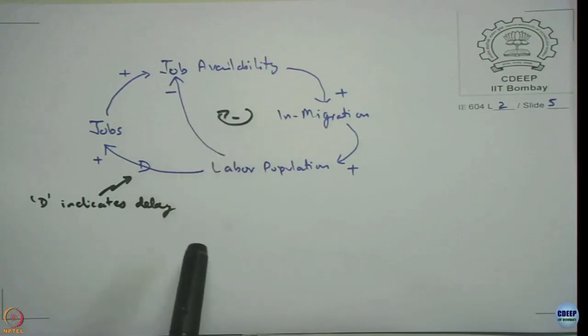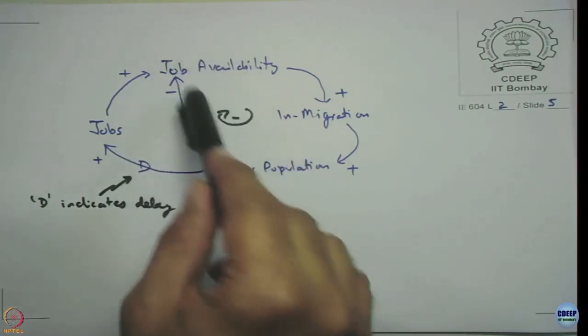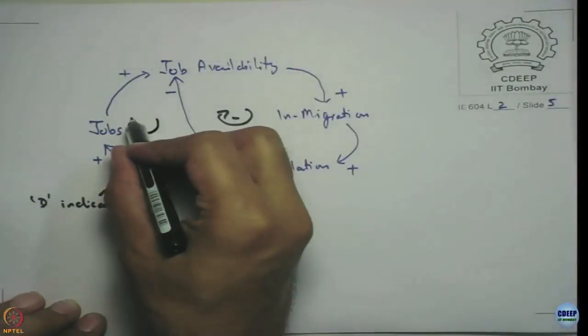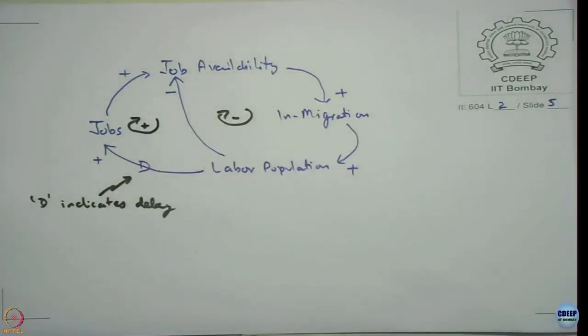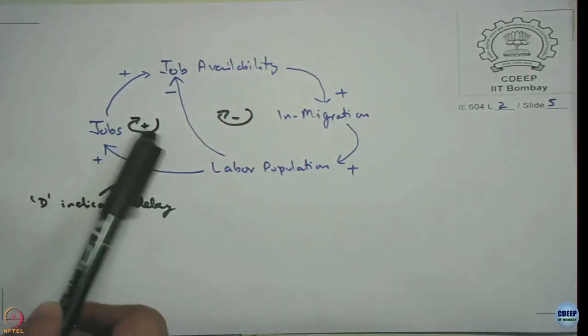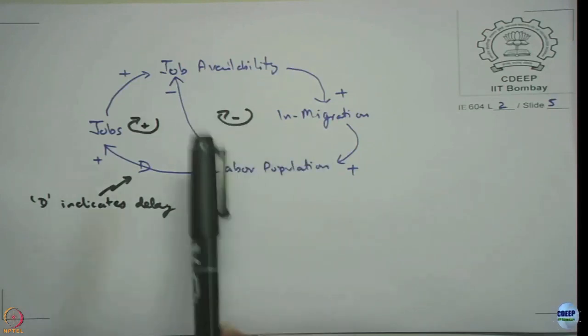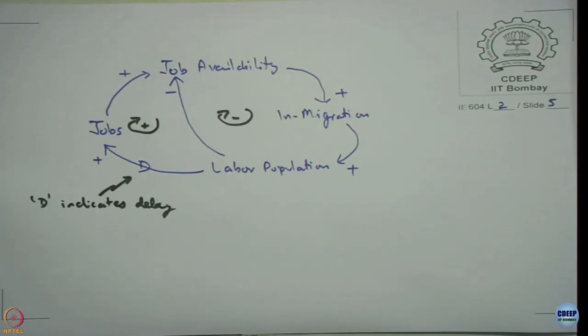The inner loop is negative feedback. The outer loop: as job availability is more, in-migration increases, labor population increases, jobs increase, which again increases job availability — so there is a positive feedback reinforcing the phenomenon. We have one reinforcing loop or positive feedback loop, and one balancing loop or negative feedback loop. The terms positive and negative are placeholders — negative does not mean bad, positive does not mean good.